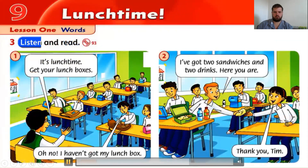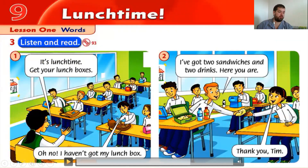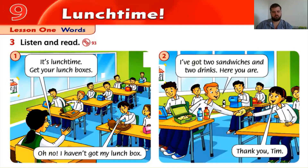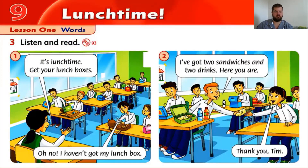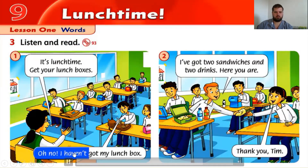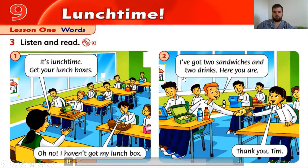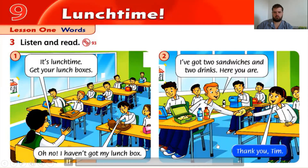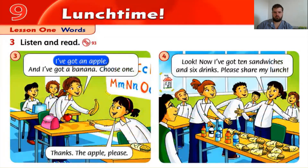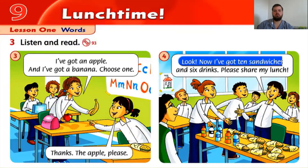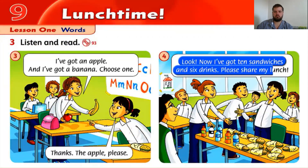Listening 93: listen and read. We're going to listen and then read when we are finished. It's lunchtime — get your lunch boxes! Oh no, I haven't got my lunch box. I've got two sandwiches and two drinks. Here you are. Thank you, Tim. I've got an apple and I've got a banana. Choose one. Thanks, the apple please. Look, now I've got ten sandwiches and six drinks. Please share my lunch.